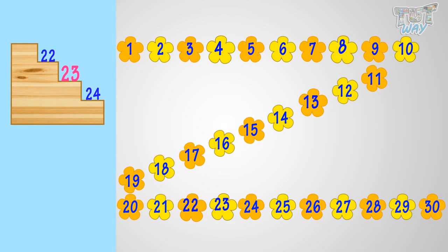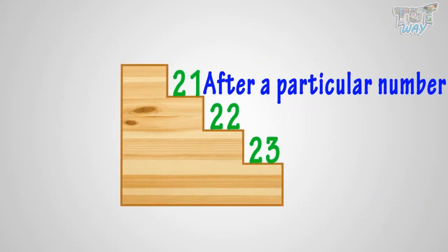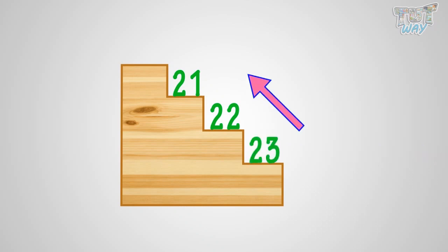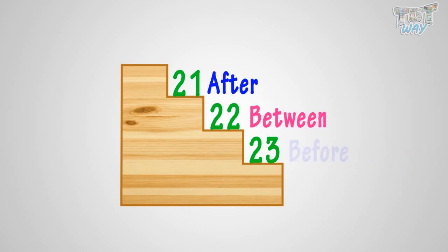Yeah! My design is complete again. So, we have learned that to find a number that comes after a particular number, count forward. And to find a number that comes before a particular number, count backward. This way, you can find numbers that come after, between, or before a particular number.